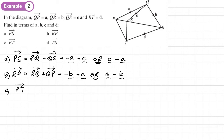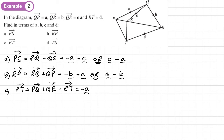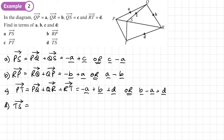Part c — find p to t. Going from p to t we go all the way around: p to q, then q to r, then r to t. P to q is negative a, q to r is b, and r to t is d. We can write that as negative a plus b plus d, or tuck the negative sign in the middle to avoid losing it.